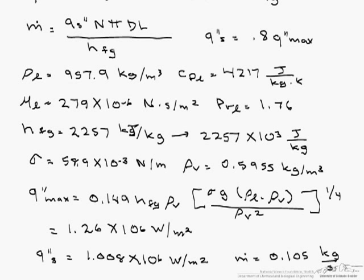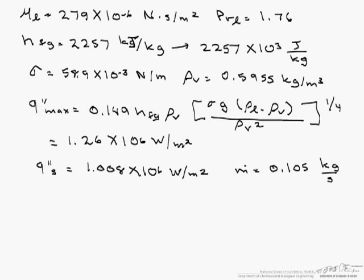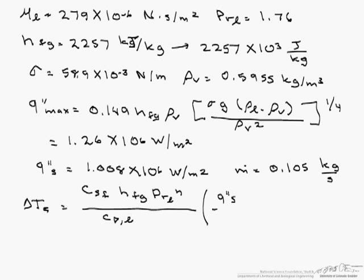To find the corresponding surface temperature of a tube, we need to find our difference in excess temperature. We're going to use the Rosenau correlation, which equals C sub SF H sub Fg Prandtl to the pn divided by our heat capacity of the liquid, multiplied by our surface heat flux divided by our liquid viscosity H sub Fg, all raised to the one third.